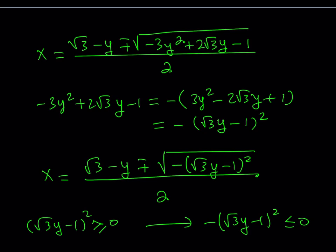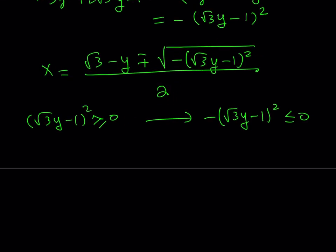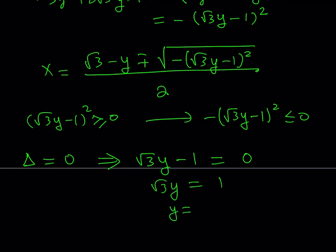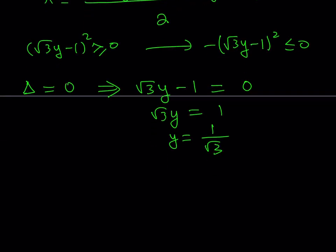Since we're looking for real solutions, the discriminant must be greater than or equal to 0. But it's also less than or equal to 0, so it must equal exactly 0. Setting (root 3 y minus 1) squared equal to 0, we get root 3 y equals 1, so y equals 1 over root 3, which simplifies to square root of 3 over 3.